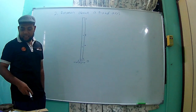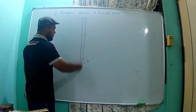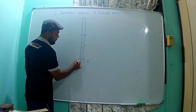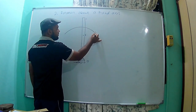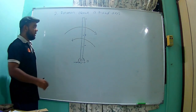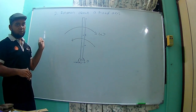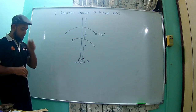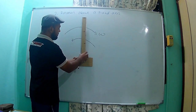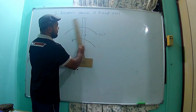Before we go to curvilinear translation, let's first look at rotation about a fixed axis. Let's say we have one bar O-A-B-C, pivoted at O. So this point can rotate either clockwise or counterclockwise with angular velocity omega. To visualize this, the bar is pivoted at O, so it can turn one way or the other way with omega.